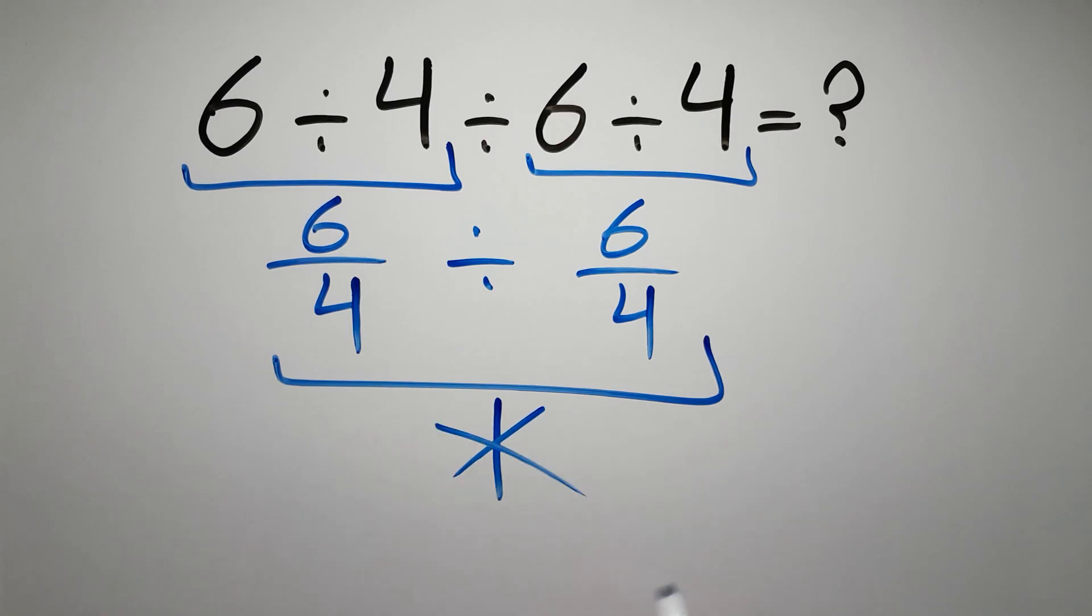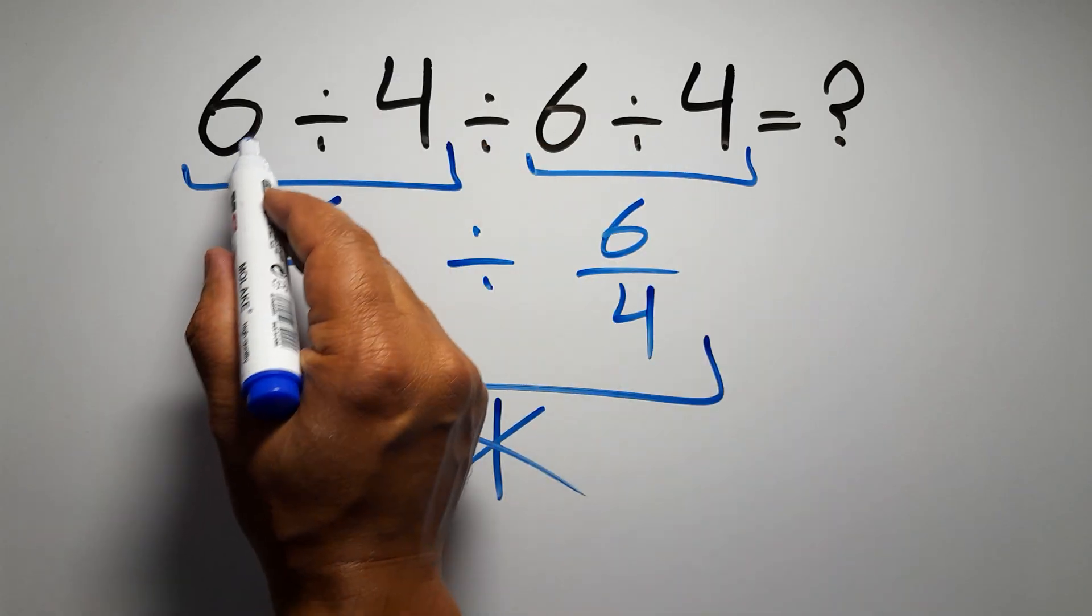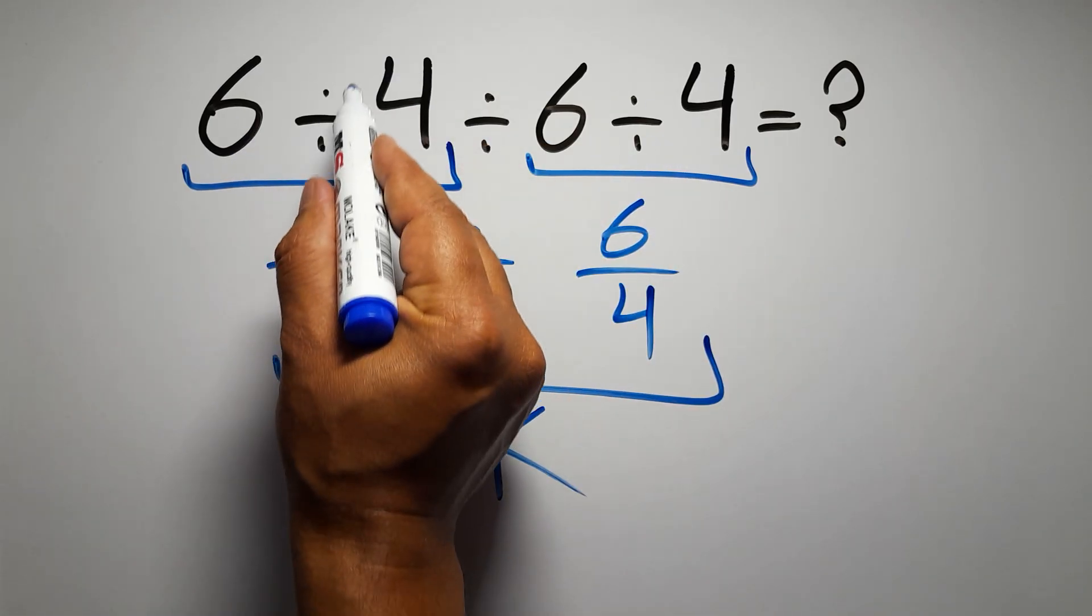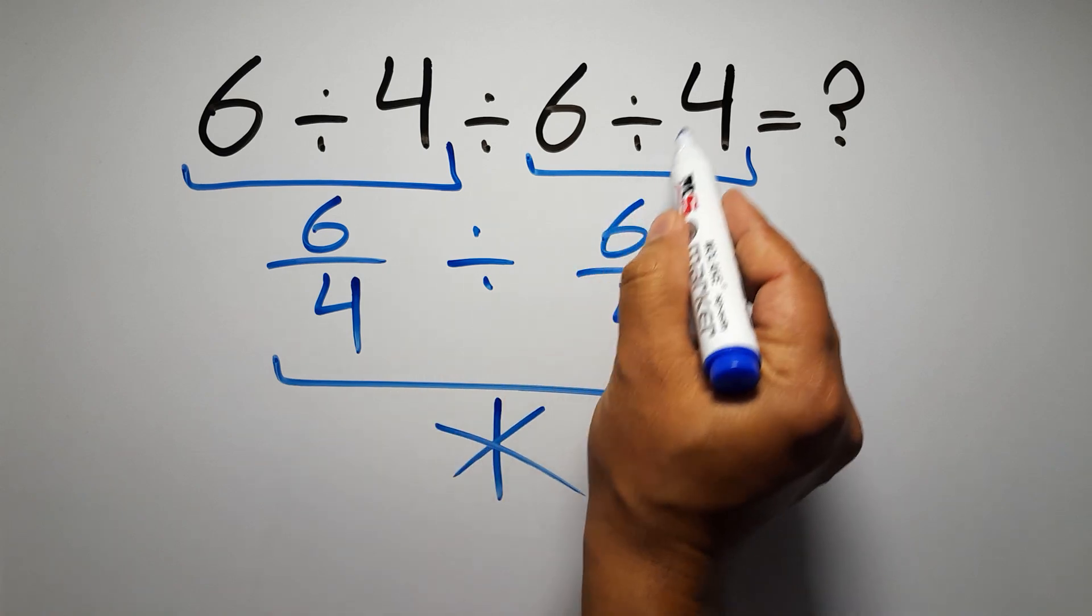But this answer is not correct, because according to the order of operations, when we have more than one division in an expression, we have to work from left to right. So here first we have to do this division, then this division, and finally this division.